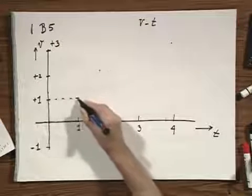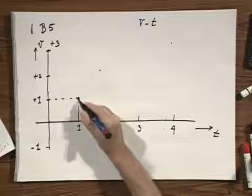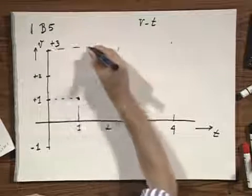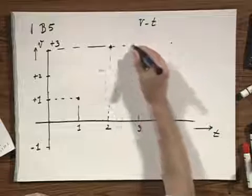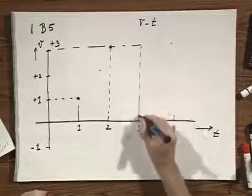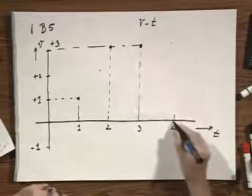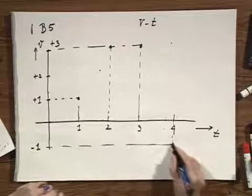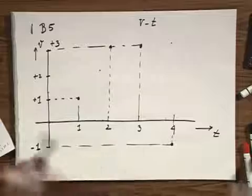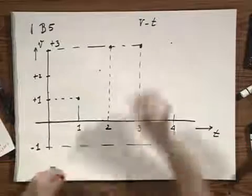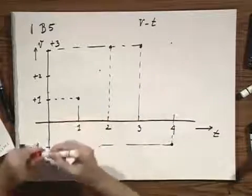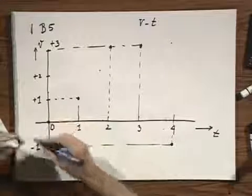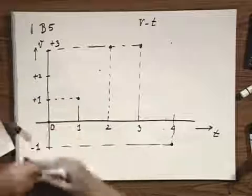There are several special points on this graph. Let me make sure that we agree on the origin. I call this time 0, and I call the velocity in this diagram here also 0.